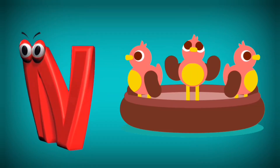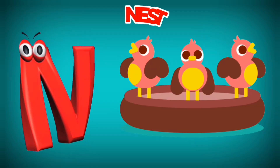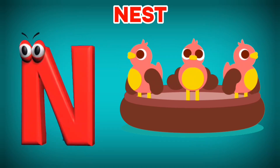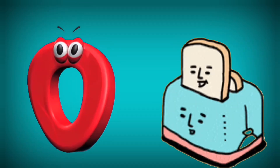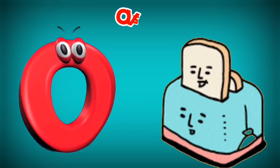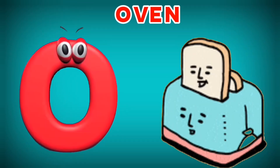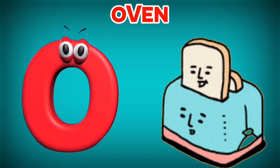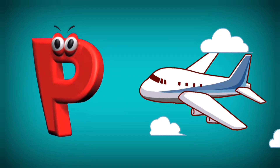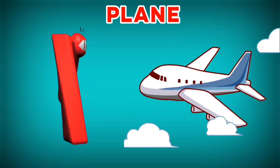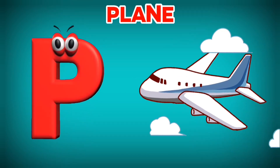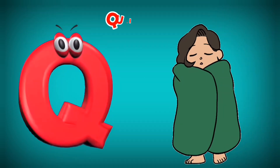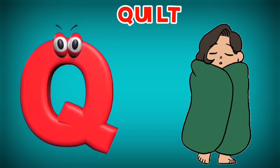N is for Nest. N, N. Nest. O is for Oven. O, O. Oven. P is for Plain. P, P. Plain.